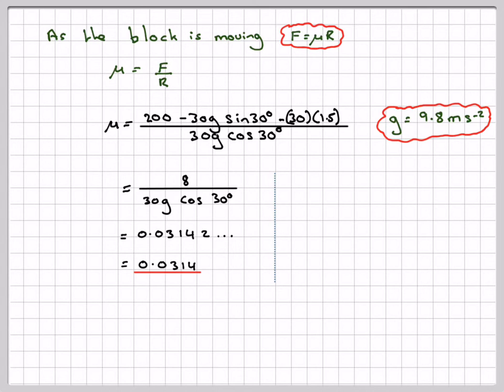If we want the exact answer, 8 divided by 30 gives you 4 over 15 and the cos of 30 is root 3 over 2. So we get 4 divided by 15G root 3 over 2. This 2 will come to the top so we now get 8 over 15 root 3 G. Rationalizing the top and bottom with root 3 root 3, root 3 times root 3 gives 3. So 3 times 15 is 45 and at the top we get 8 root 3. So we've got 8 root 3 over 45G being the exact answer.